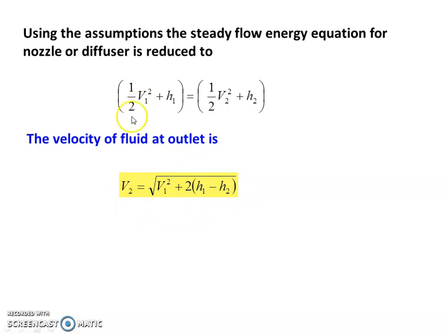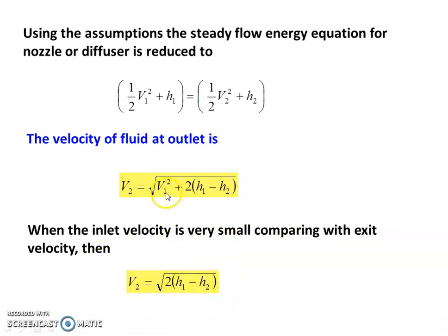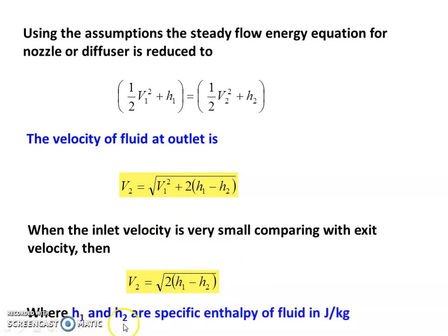This is the nozzle equation after rearrangement. When the inlet velocity is very small compared to the exit velocity, the equation simplifies to: V2 = √(2(H1 − H2)). Note that the enthalpy difference H1 − H2 should be in joules per kilogram when substituting into the equation for problem solving.